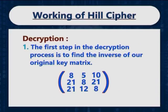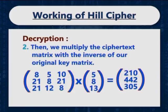Next is how to perform decryption using Hill cipher. The first step in the decryption process is to find the inverse of our original key matrix. Therefore, the inverse of the key matrix contains 8, 5 and 10 in the first row, whereas the second and third row consists of 21, 8, 21 and 21, 12 and 8 respectively. Then we multiply the ciphertext matrix with the inverse of our original key matrix, and after multiplication we get 210, 442 and 305 as the outcome in matrix form.